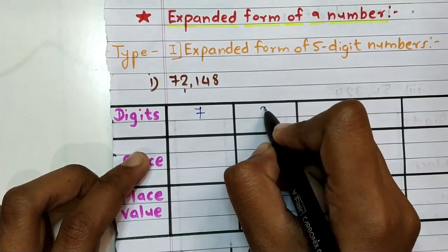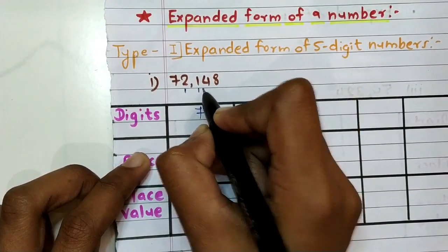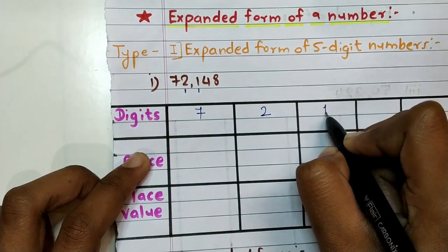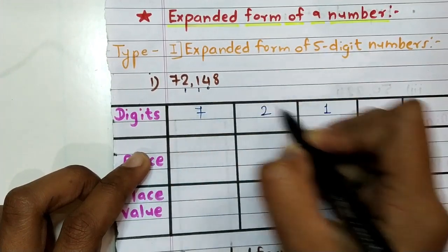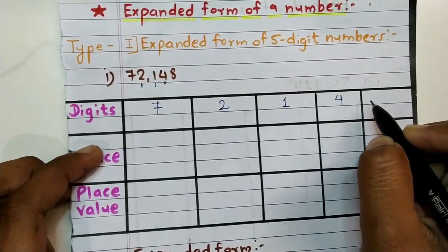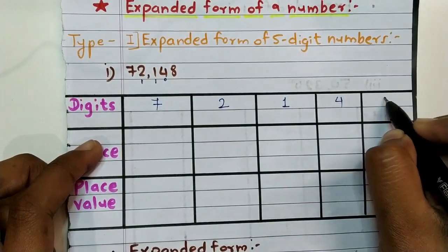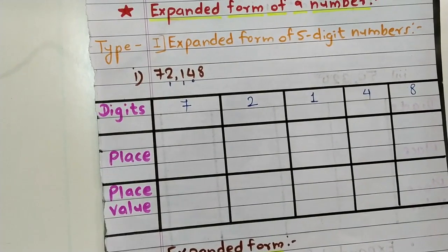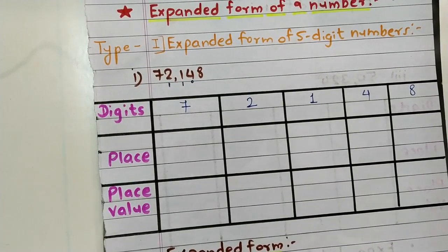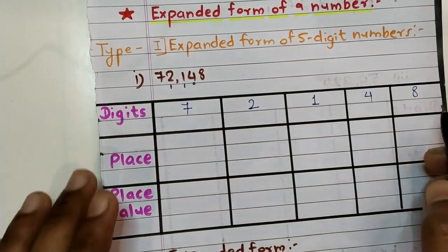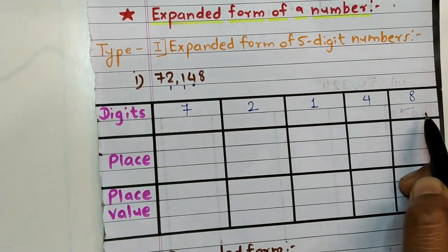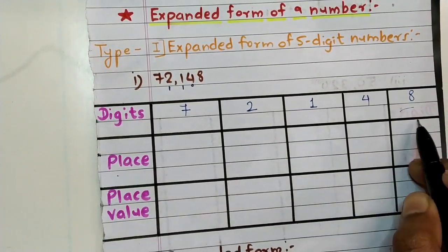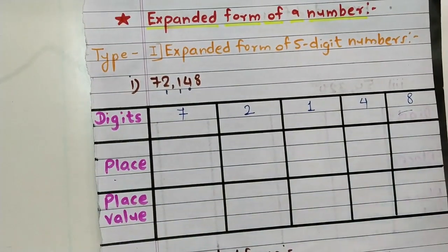Third digit is one, fourth digit is four, and our last digit is eight. We already know that place value is measured from right-hand side to left-hand side, so firstly we start from the last digit.